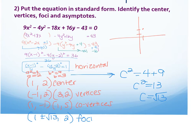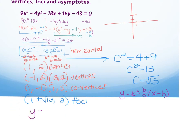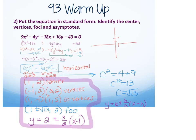The asymptote formula for a horizontal hyperbola is y equals k plus or minus b over a times x minus h. So y equals 2 plus or minus 3 over 2 times x minus 1. That's all the information needed to answer the question.